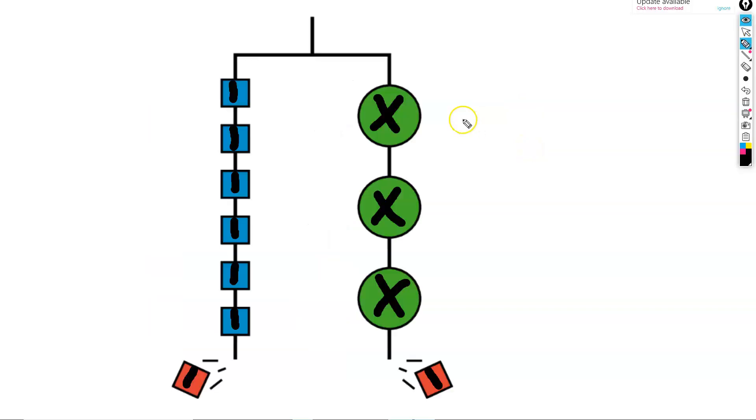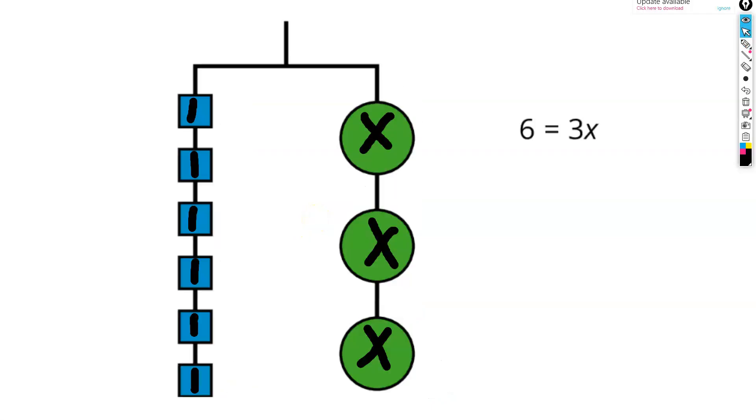We want to find out how much one of these x's weighs. To do that, we're going to take away that extra 1 that we had hanging on the bottom. However, because our hanger needs to weigh the same amount on both sides, we need to take away the same amount of weight on the left side as well.